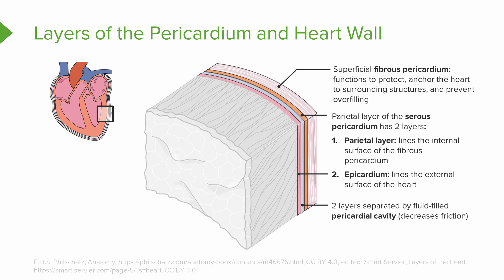These two layers — the parietal and visceral layers of the serous pericardium — have a cavity in between them known as the pericardial cavity. This cavity has a fluid in it that helps to decrease friction, since the heart is moving so much and friction causes heat. So we need a way to decrease that friction, and that's done here between the parietal and visceral layers.